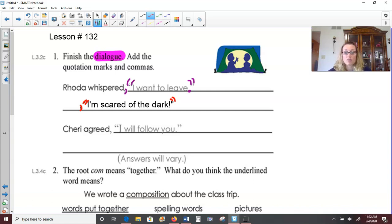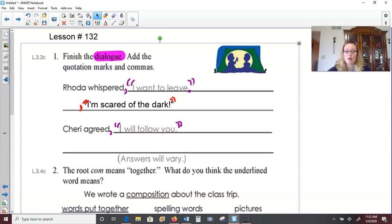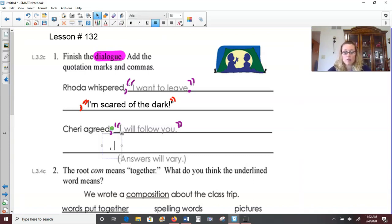So just to trace over what I did, you would need to add your comma after whispered. And then quotation marks around the words that Rhonda is going to say. I'm scared of the dark. You could add your own in there. And then Sherry agreed, comma, I will follow you. So quotation marks around what Sherry is saying. Now I'm going to add my own example here. So Sherry agreed, comma, quotation marks. Me too. Quotation marks to end it. So Rhonda whispered, I'm scared of the dark. Sherry agreed, me too. So you could add one of these examples or you can come up with your own. Pause the video if you need a moment to jot that down.